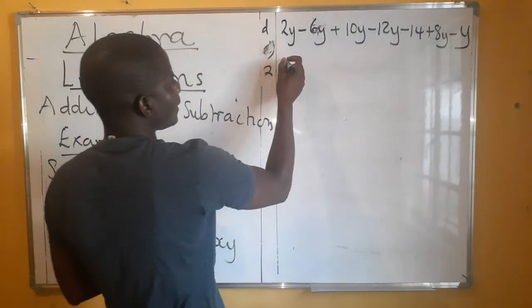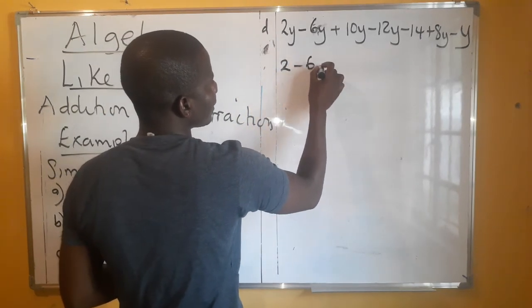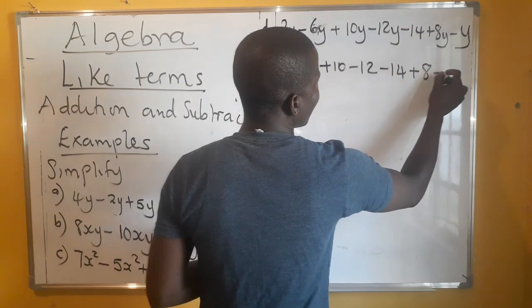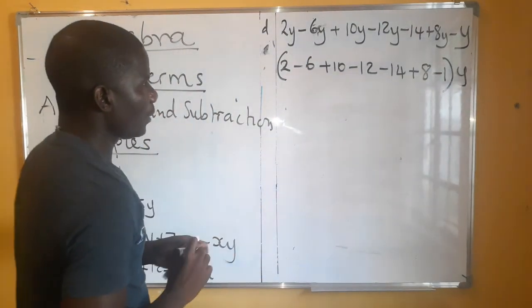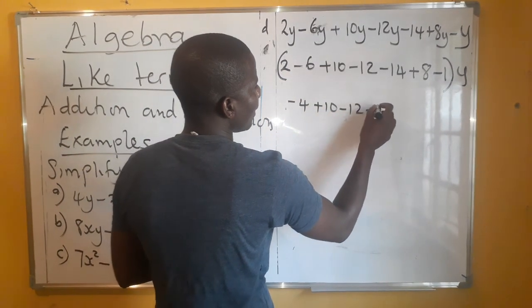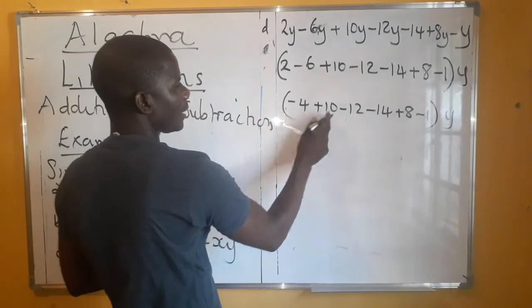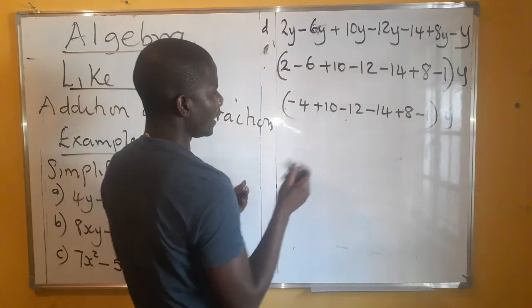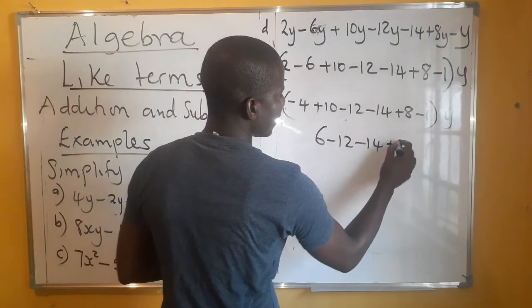Let's look at this next one. Same thing — y is common. So we have 6 plus 10 minus 12 minus 14 plus 8 minus 1. Here the coefficient is 1. We put y outside and simplify. The first step gives us minus 4 plus 10 minus 12 minus 14 plus 8 minus 1 times y. When signs are different, subtract the smaller from the larger. We get 6, which keeps the sign of the bigger number — positive — giving us 6 minus 12 minus 14 plus 8 minus 1.